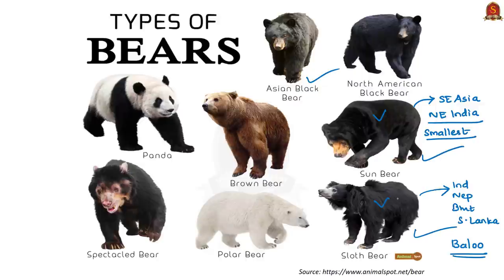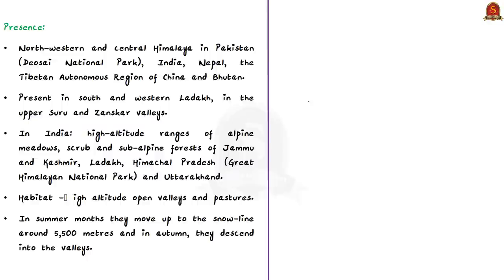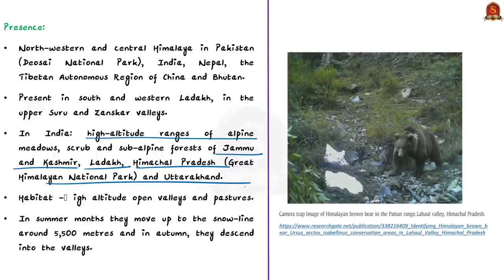The Himalayan brown bear is found in the northwestern and central Himalayas — in Nepal, the Tibetan Autonomous Region of China, and Bhutan. They may also be present in south and western Ladakh, particularly in the upper Suru and Zanskar valleys. In the Indian Himalayan regions, the brown bear is mostly distributed in high-altitude ranges of alpine meadows, scrub, and subalpine forests of the union territories of Jammu and Kashmir and Ladakh.